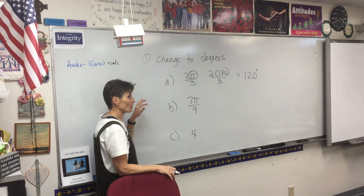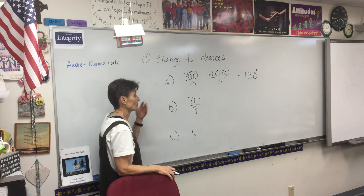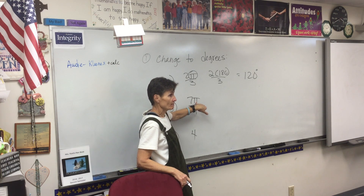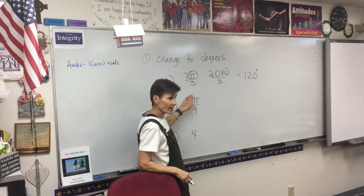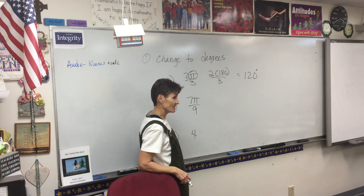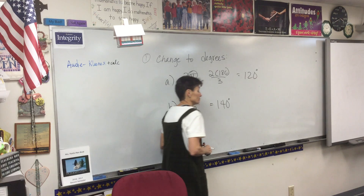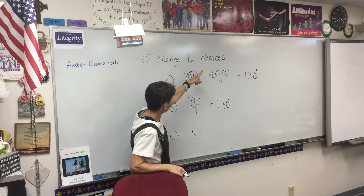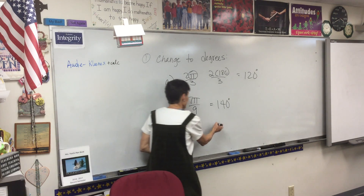This will be on a no-calculator part of tests and quizzes, so it is important that you get this basic arithmetic. Same thing here — that π right there is 180. So when we divide it by 9, what's 180 divided by 9? 20. Times 7 — 140 degrees. So for these two problems, we're changing from radians to degrees. π is 180 — that's the key. That's the key for this one too.